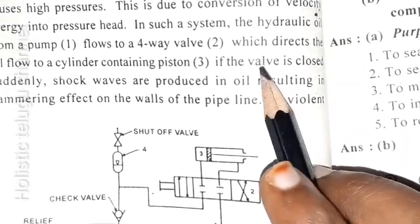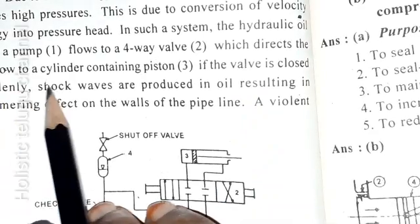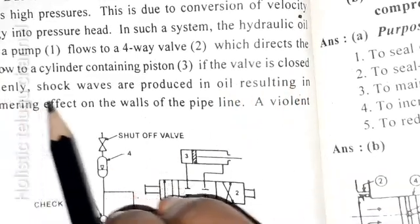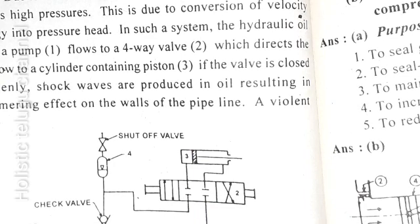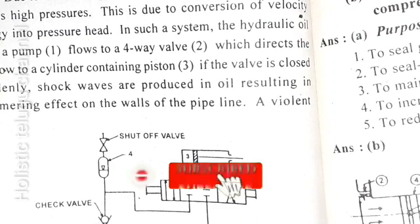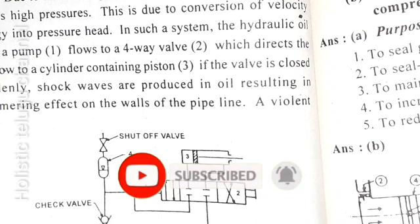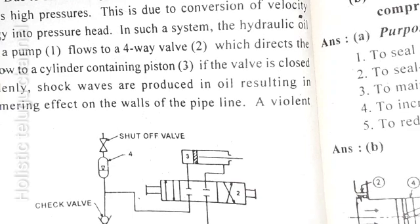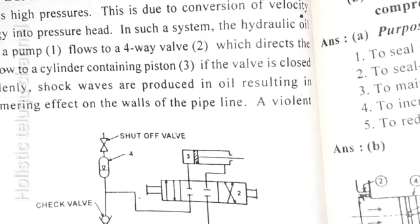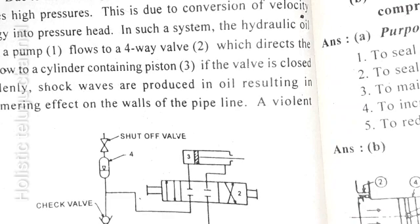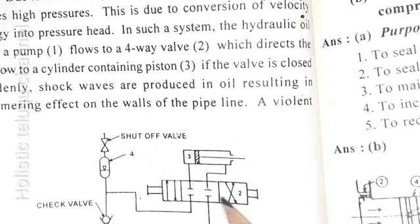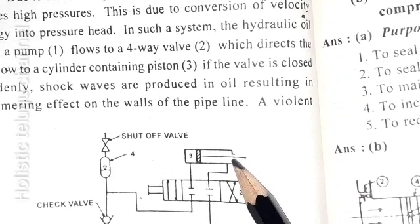This is due to conversion of velocity energy into pressure head. In such a system, the hydraulic oil from pump flows to the 4-way valve which directs the oil flow to cylinder containing piston. If the oil valve is closed suddenly, shock waves are produced in the oil resulting in a hammering effect. A violent hammering effect will damage fittings and pipes.